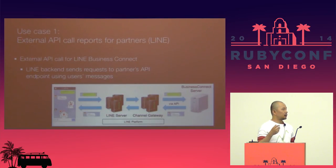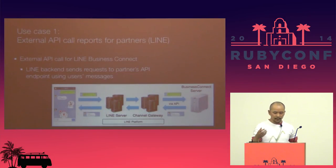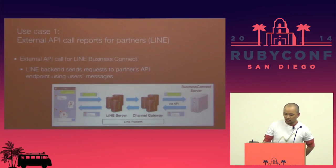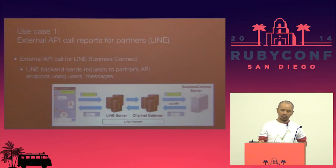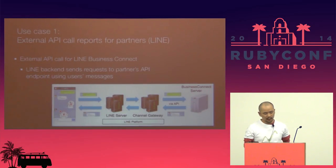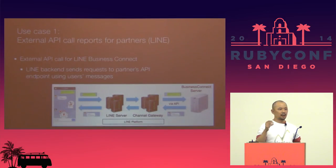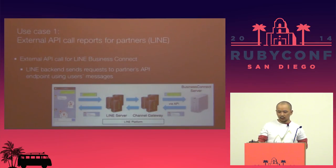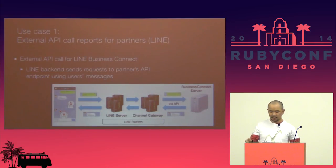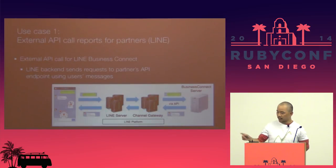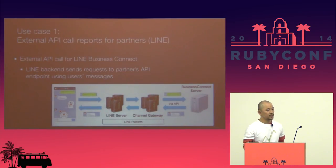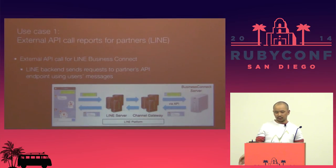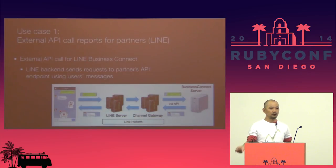We are now using Norikra in our production environment. We have a web API for our partners, and when any user sends a message to our partner's official accounts, our server sends these messages to our partner's server — that is written in our Business Connect server. Then our partners respond with their own messages back to our API server.